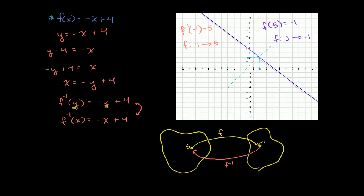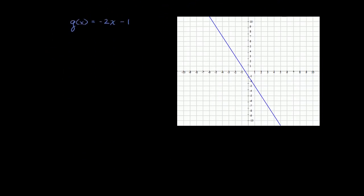Let's do one more of these. So here I have g of x is equal to negative 2x minus 1. So just like the last problem, I like to just set y equal to this. So we say y is equal to g of x, which is equal to negative 2x minus 1.